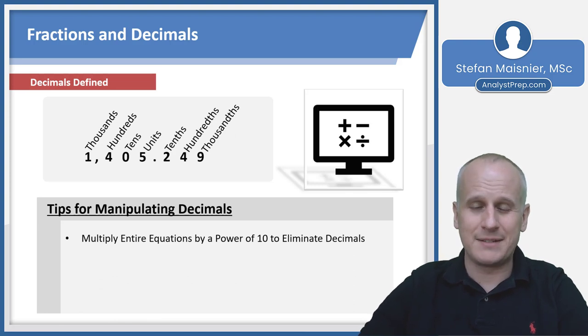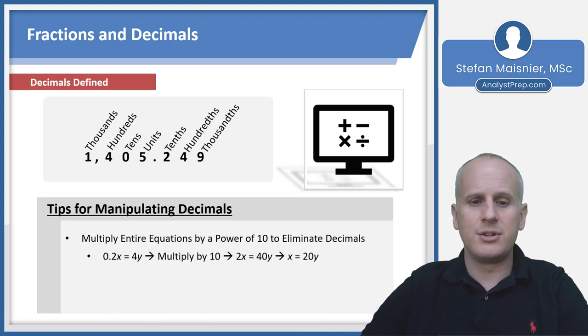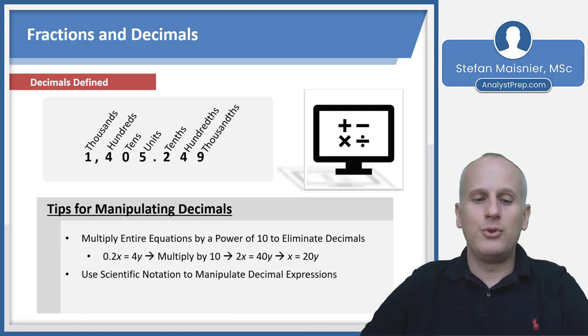For manipulating decimals, multiply the entire equation by a power of ten to eliminate decimals. If you have 0.2x equals 4y, multiply by 10 to get 2x equals 40y, making it easier to see that x equals 20y.